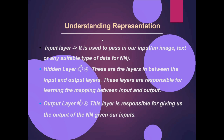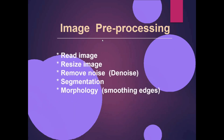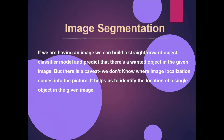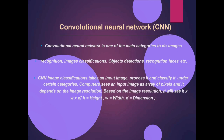Here is image pre-processing: read image, resize image, remove noise, segmentation, morphology. Here is image segmentation, meaning breakdown of the image into small pieces, and then trying to match with the dataset.